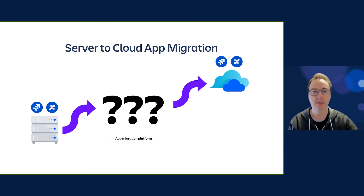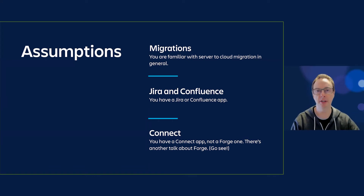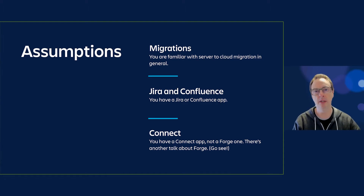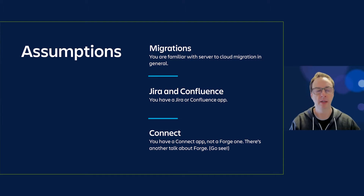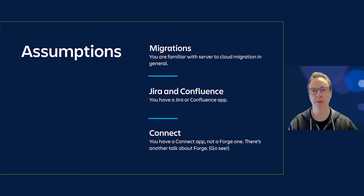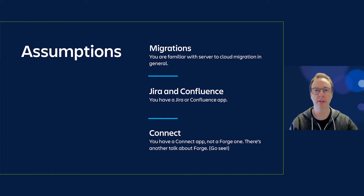I'm making some assumptions today. I'm assuming that you're familiar with the server to cloud migration in general, that you've performed some migrations, maybe tried to play with some code, and tried to get some App Migration work done. We're only going to talk about Jira and Confluence today, and I'm assuming you have a Jira or Confluence app on server and possibly an app in cloud. We're specifically talking about Connect apps — if you have a Forge one, there's another talk which I highly recommend you go and listen to.